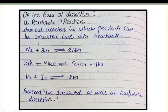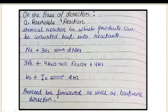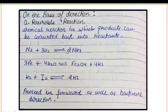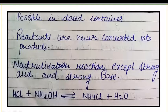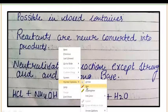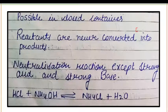Reversible reactions can proceed in both forward and backward directions, as shown by the dual-sided arrow. These kinds of reversible reactions are possible only in closed containers, and the reactants are never converted completely into products. Also, neutralization reactions involving weak acid and strong base are considered reversible. For example, HCl + NH₄OH leads to the formation of NH₄Cl + H₂O.